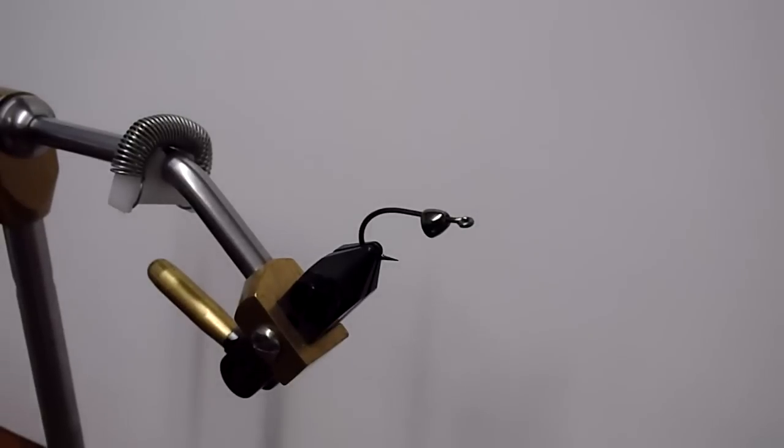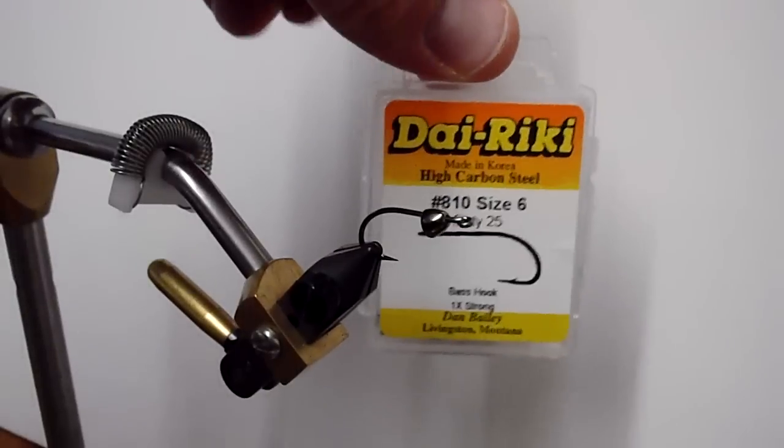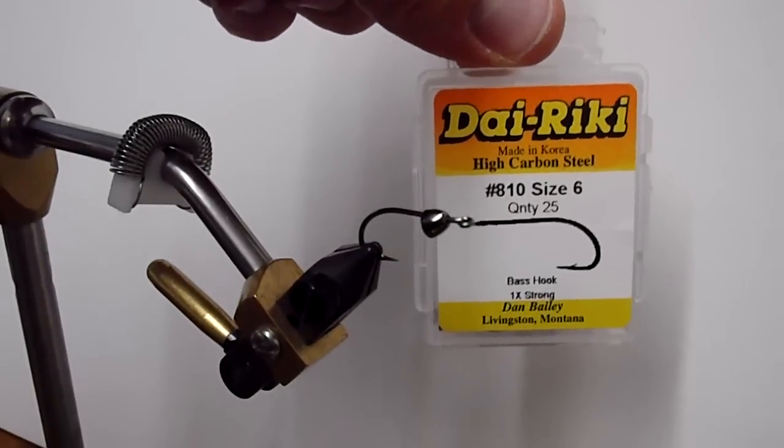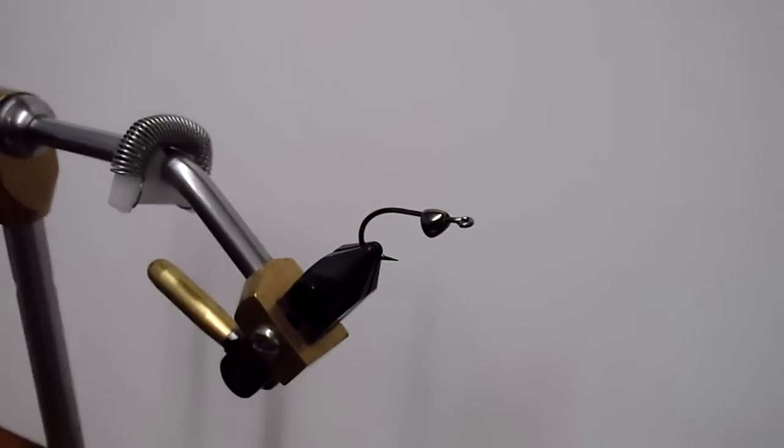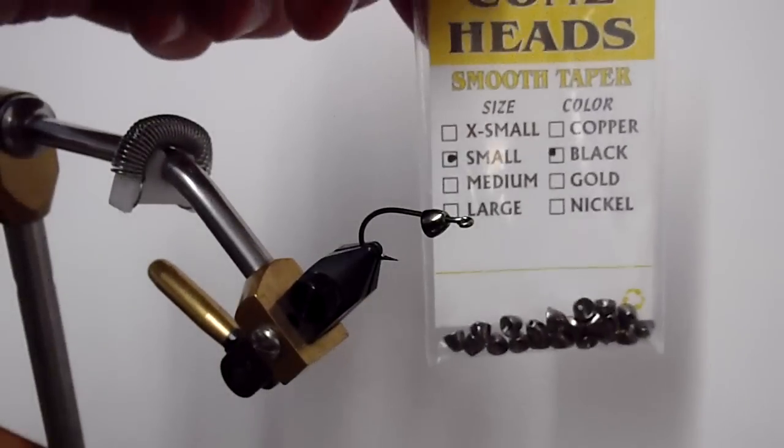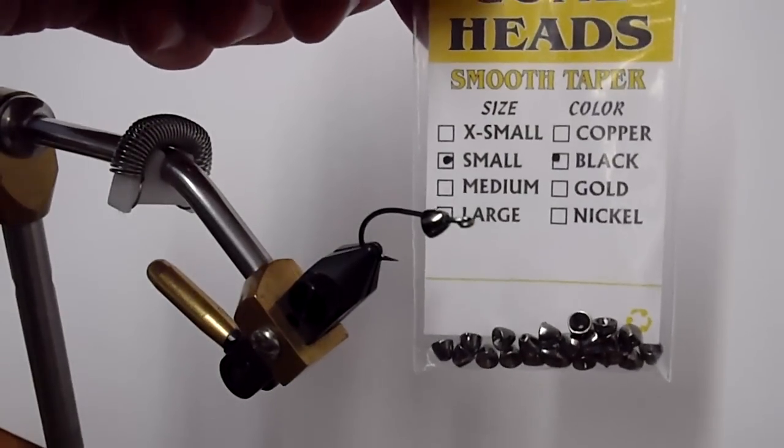What we'll be needing for this pattern today will be some Dairiki 810 size 6 bass hooks, some small wopsy coneheads in a nickel black.